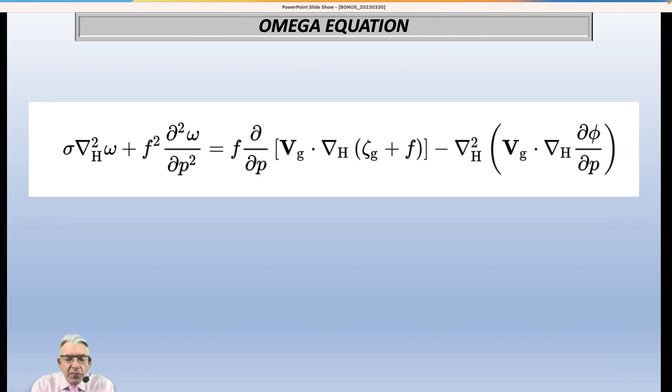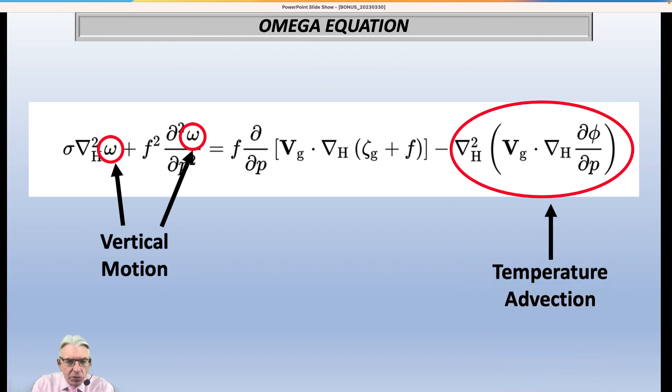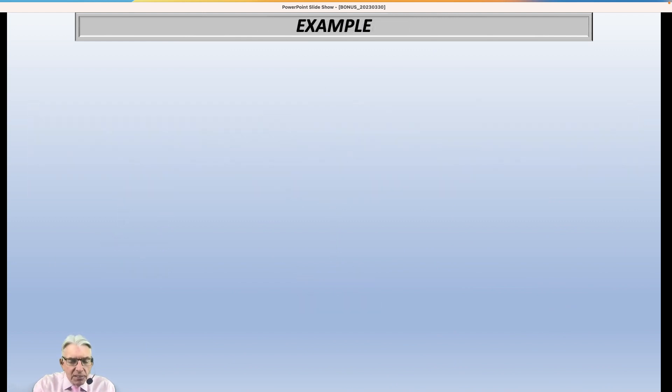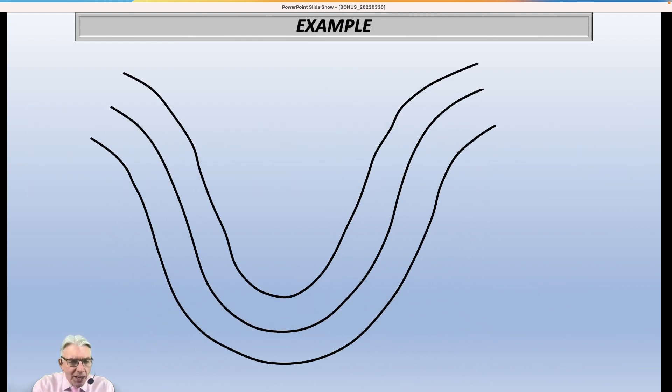So this is what we showed you the other day. And the W stands for vertical motion, whether or not the air is going up or down. So that's on the left side of the equation. And then on the right side, the other day we talked about this term, which is the temperature advection, how the wind is advecting or moving warmer or colder air into or out of a certain location. But today, what we're going to talk about is the other part of the equation, and this is what we call vorticity advection. So let's go ahead and delve into this a little bit here with an example.